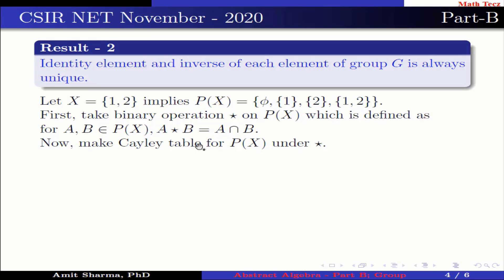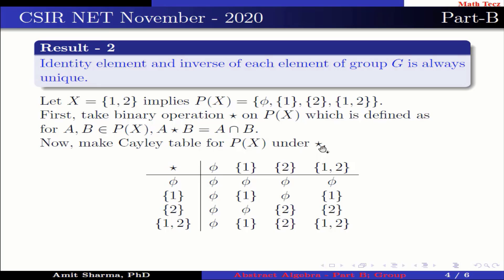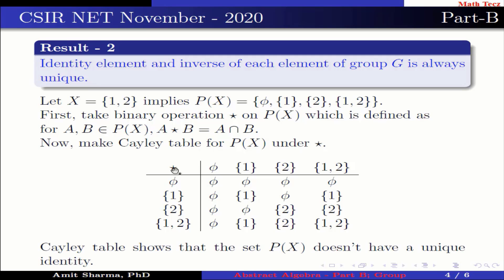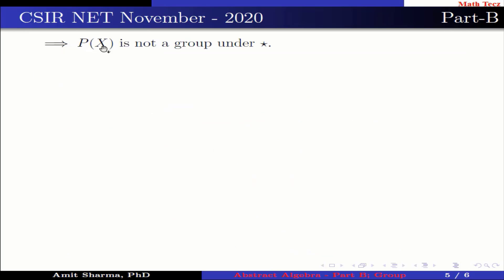Now make the Cayley table for P(X) under star. The Cayley table shows that the set P(X) doesn't have a unique identity. This is because empty set star empty set gives empty set, and {1, 2} star {1, 2} gives {1, 2} — both act as identities for themselves. This implies P(X) is not a group under star. Therefore options 1 and 2 are false.